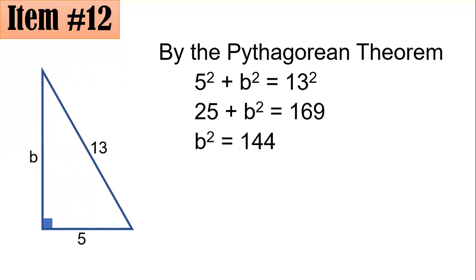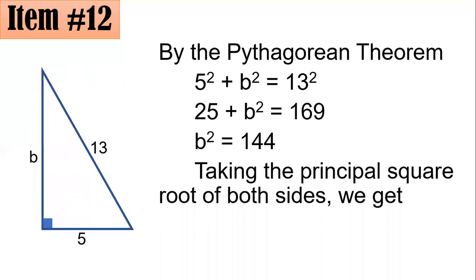And there are two roots but we will take only the value of the principal or positive square root here since a dimension or a length of a side of a triangle is positive. And the square root of 144 is 12, hence letter A is the correct answer.